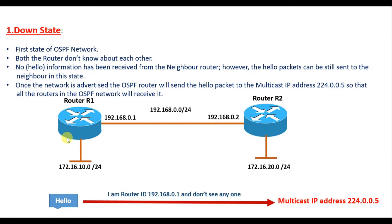In this scenario, when I configure OSPF in Router 1 and it starts to advertise a network, Router 1 will send a Hello packet to the multicast IP address 224.0.0.5. Once this Hello packet is sent to this multicast address, the packet will be multicasted to all the routers in the OSPF network. This is how a router sends a Hello packet to all neighbors — all devices in the OSPF network — as soon as it is configured.